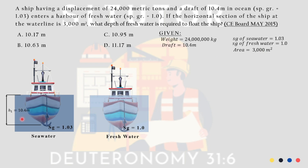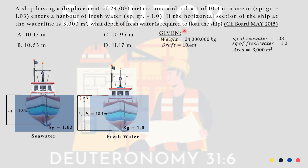Let's call H1 = 10.4 meters, which is the draft. This is the height of the ship when it moves to freshwater — the ship sinks deeper. H1 is the original draft from seawater, and H2 is the new height in freshwater. What we are looking for is delta H — that additional volume. Since the question asks: what depth of freshwater is required to float the ship?